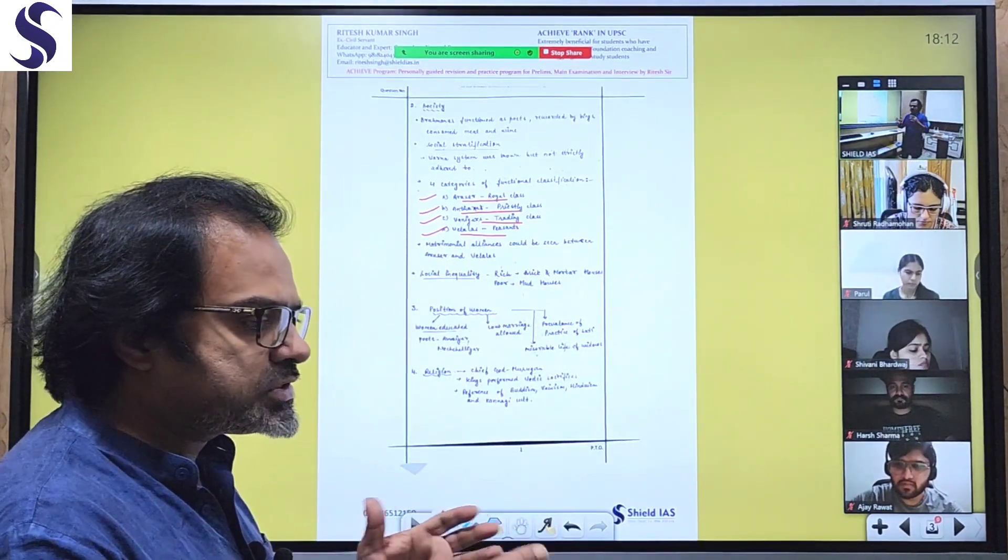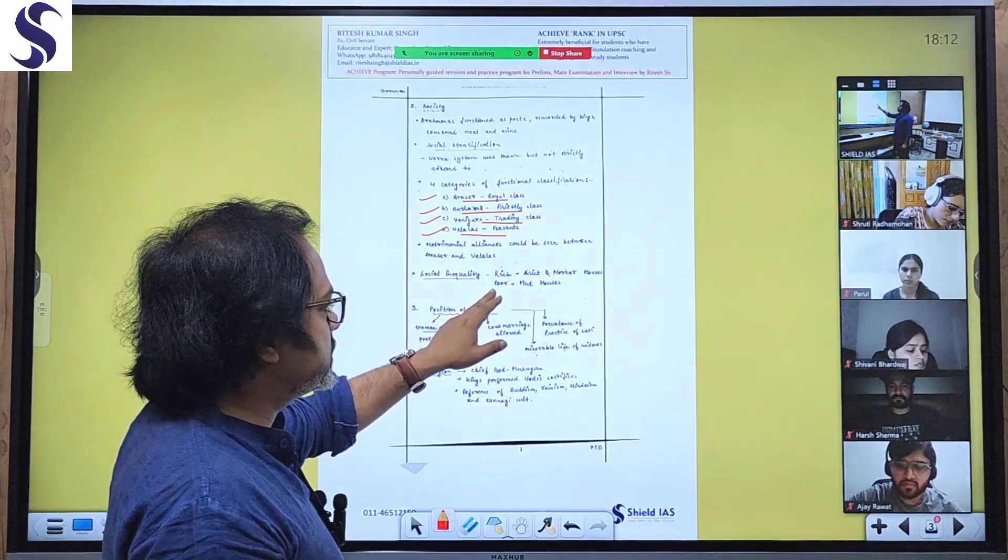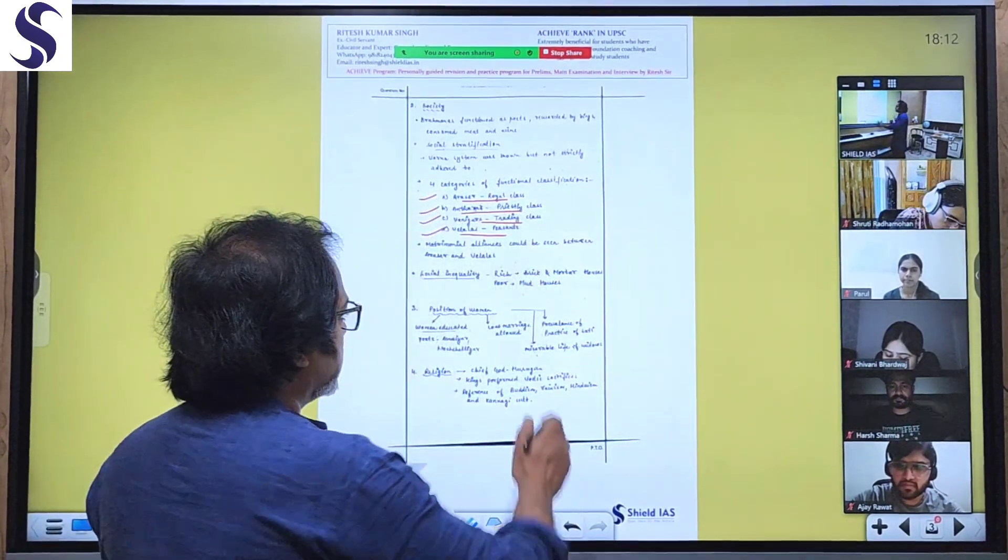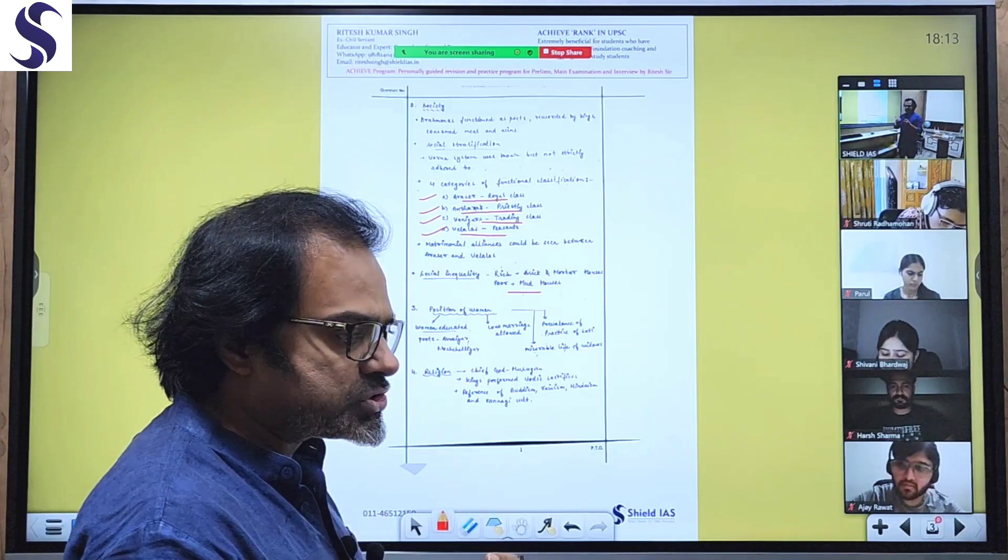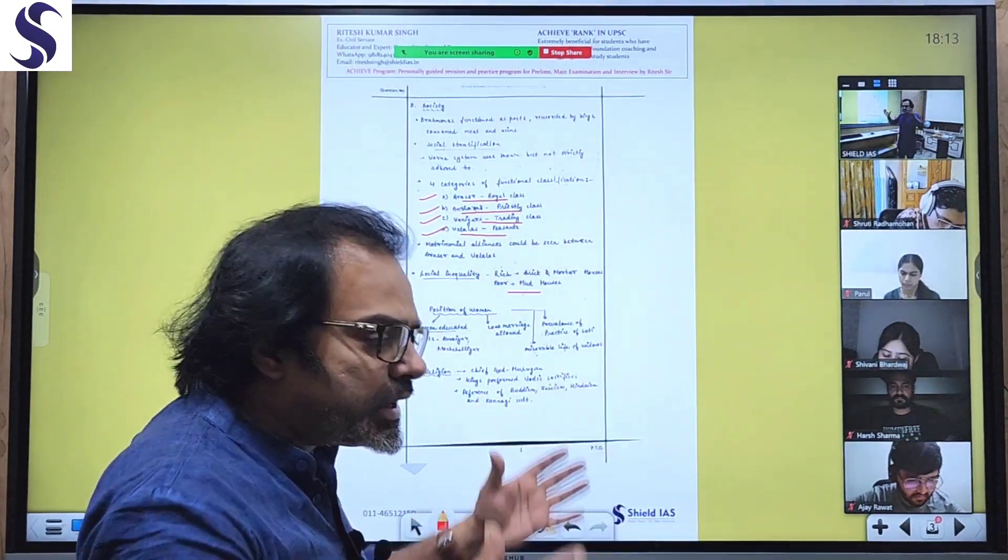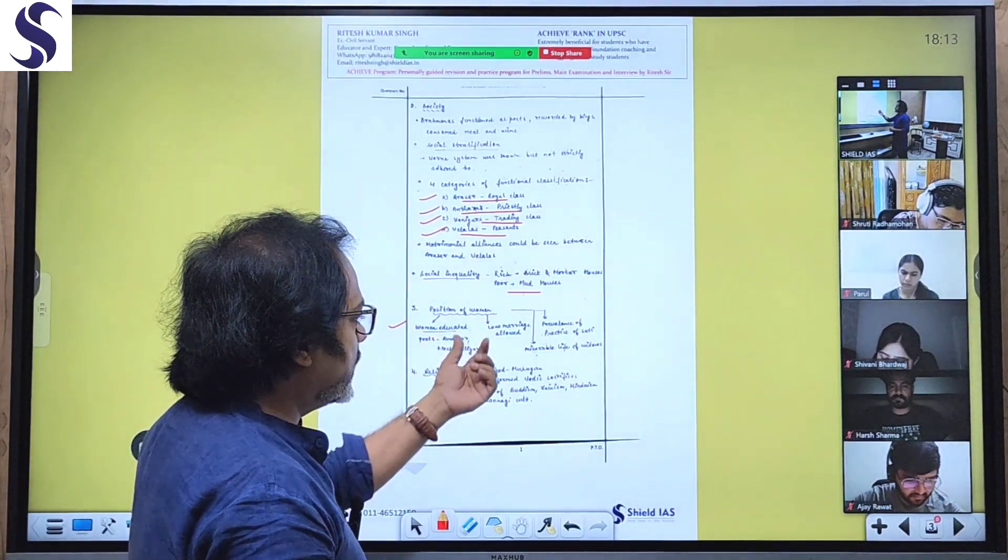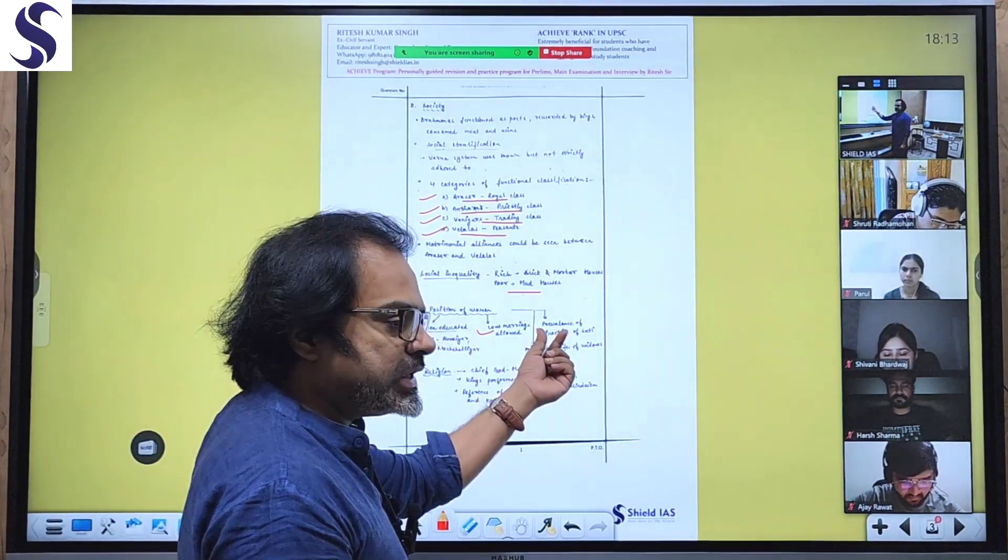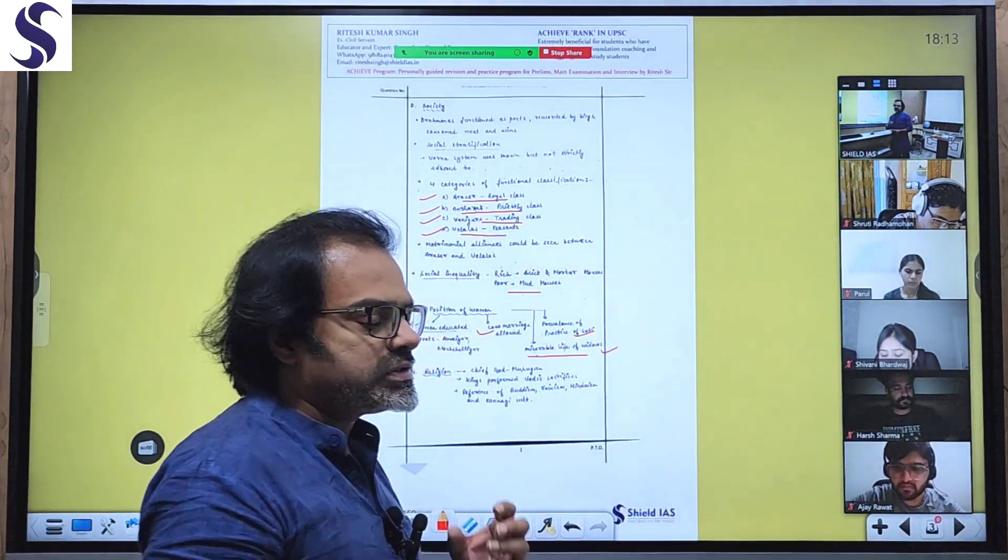Material alliances could be seen between the Arasa and Vilalas classes - it was common that two different classes of people were marrying, so it was still fluid in nature, not very strict. Regarding social inequality: the rich were living in big houses and the poor lived in mud houses. The position of women showed certain differences - some positive and some disadvantages. Some women were educated, they were poetesses. Love marriage was allowed, showing more openness in choosing life partners. However, there was prevalence of Sati practice and miserable life of widows. We're seeing some positives and some negatives.